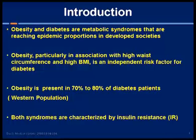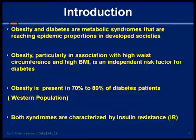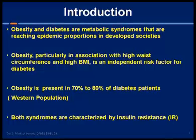There is no debate that there is a linear correlation between obesity, metabolic syndrome, and diabetes. It has been proved again and again in various studies that as the population starts gaining weight and abdominal girth grows, the incidence of diabetes also increases. Obesity is present in about 70 to 80 percent of diabetic patients in the western population, and both metabolic syndrome and diabetes are characterized by insulin resistance.